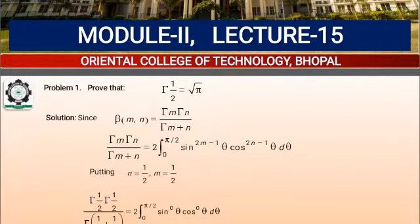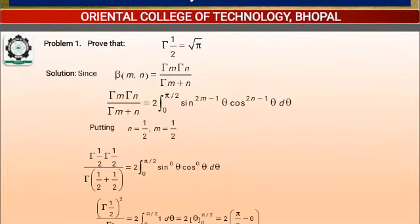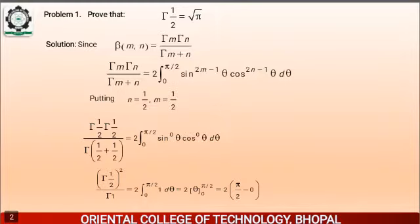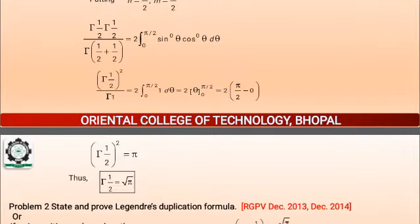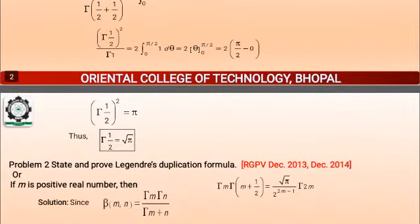If we put M = 1/2 and N = 1/2, then we have Gamma(1/2) times Gamma(1/2) upon Gamma(1/2 + 1/2), equal to twice the integration from 0 to pi/2 of sine^0(theta) cos^0(theta), since the powers of sine and cos will be 0. This gives Gamma(1/2)² upon Gamma(1) equal to twice the integral from 0 to pi/2 of 1 d-theta. Integrating, we get twice times (pi/2 - 0), so Gamma(1/2)² equals pi, therefore Gamma(1/2) equals root pi.